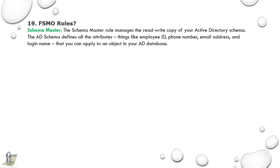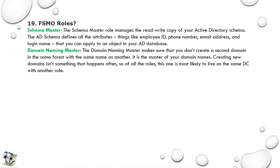Nineteenth question: What are FSMO roles? There are five types of FSMO roles. Schema master: manages the read-write copy of your Active Directory schema, which defines all the attributes — things like employee ID, phone number, email address, and login name — that you can apply to an object in your AD database. Domain naming master: ensures you don't create a second domain in the same forest with the same name as another. This DC is the only one that can add or remove a domain from the directory.